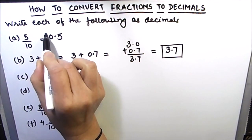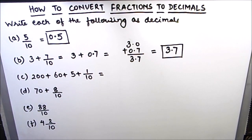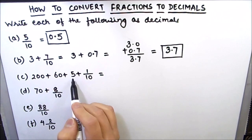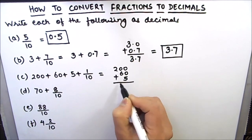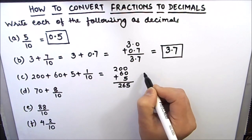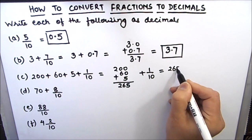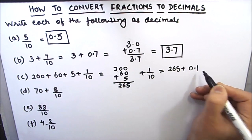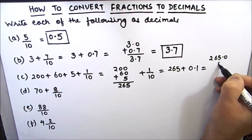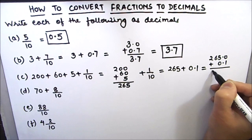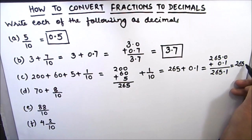The next one is 200 plus 60 plus 5 plus 1 by 10. The three whole numbers we can add easily: 200 plus 60 plus 5 will be equal to 265, plus 1 by 10. So this will be 265 plus 0.1. When we add the two numbers, 265.0 plus 0.1, this comes out to be 265.1. So our final answer is 265.1.